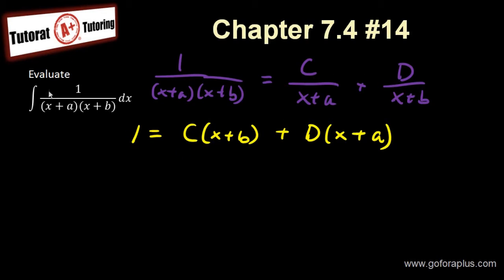Now I want to let x equals to minus b. This is assuming that a not equals to b. So if we assume that a is not equal to b, then we can say that x equals to minus b, then this is going to be 1 equals to... this whole thing is gone because it would be 0. And this thing will be d times (-b+a).